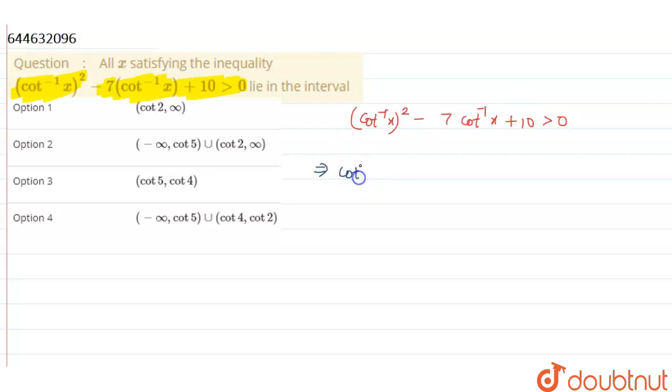So we can write it as (cot⁻¹x)² - 5(cot⁻¹x) - 2(cot⁻¹x) + 10 is strictly positive.